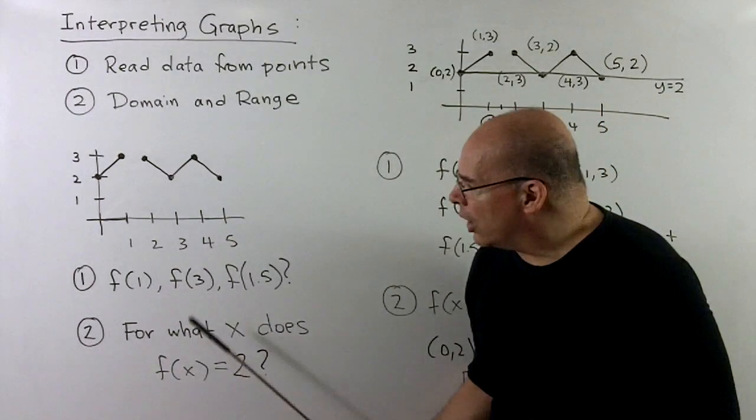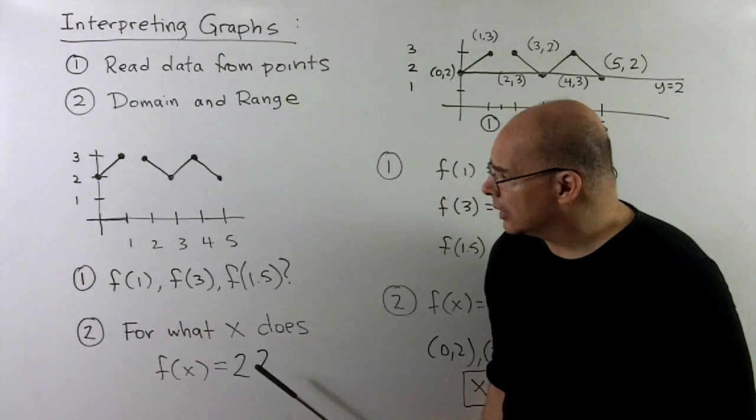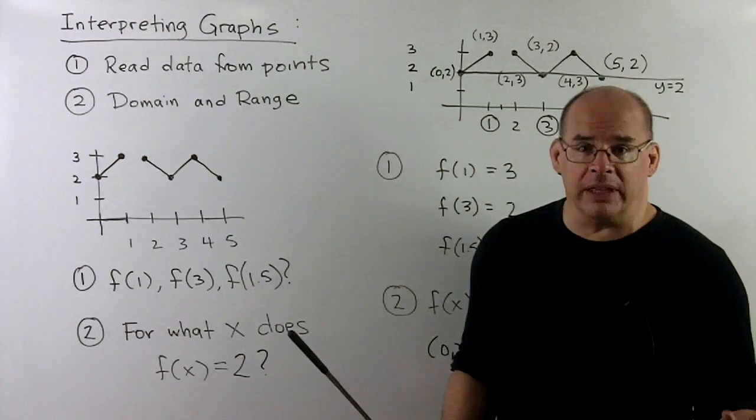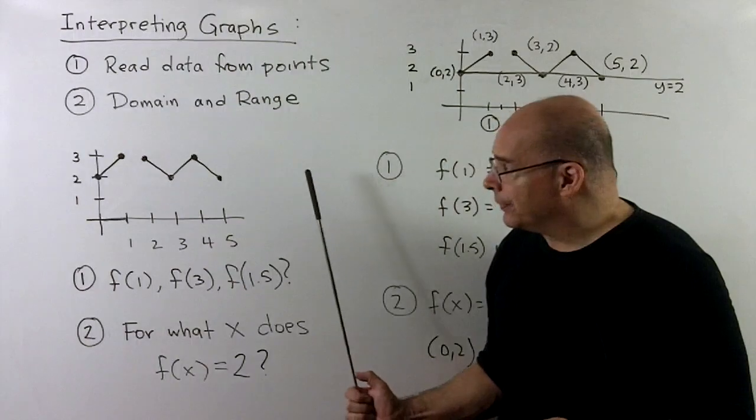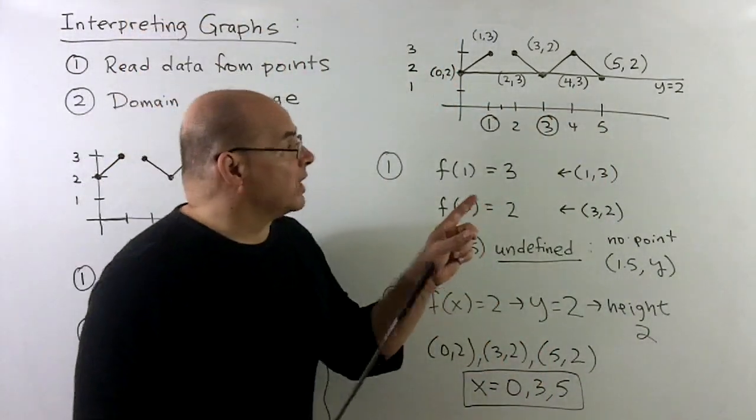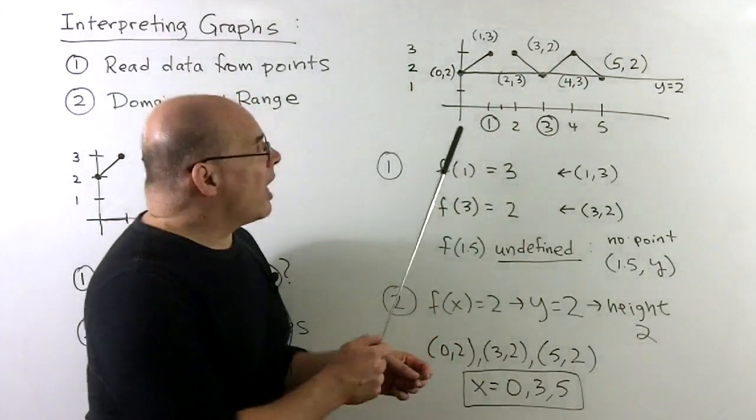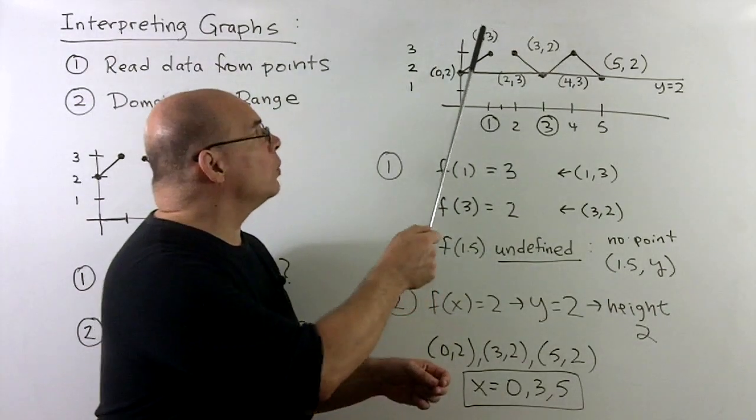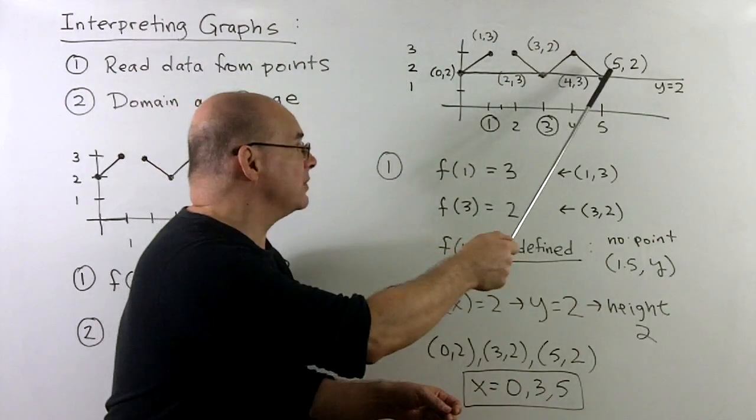Things we can ask. How about f of one, the value of f of one, f of three, and f of one and a half. Then, going the other direction, I want to know for what x does f(x) equal to two. As a first step, if you're not sure how to begin with these, you should just start labeling points on your graph. We think in terms of going to the right and going up. I'll have points at the ends of the segments: zero, two, one, three, two, three, three, two, four, three, five, two.